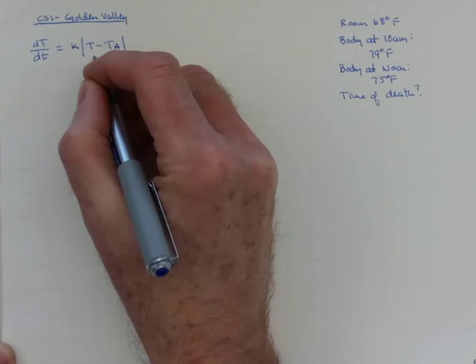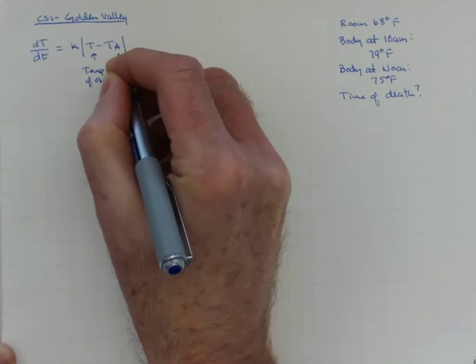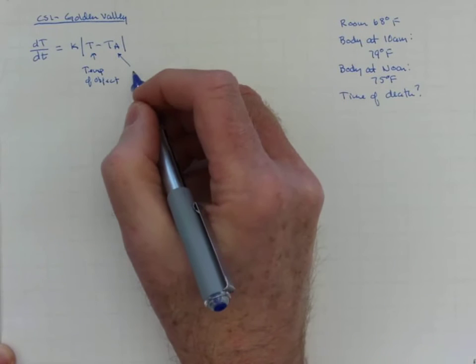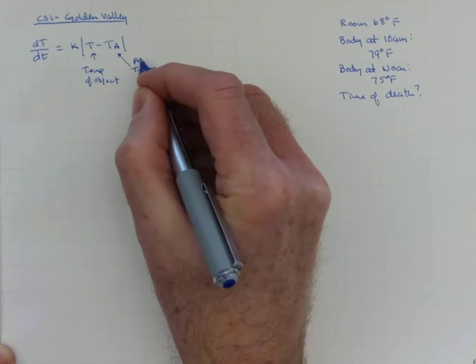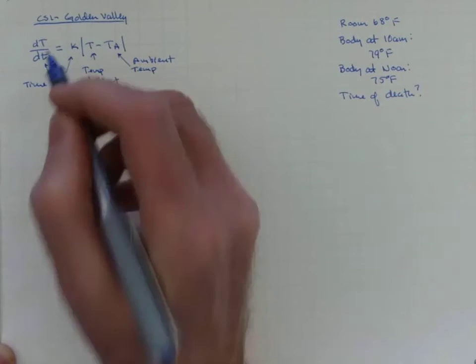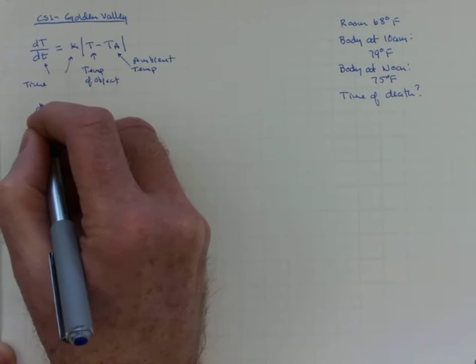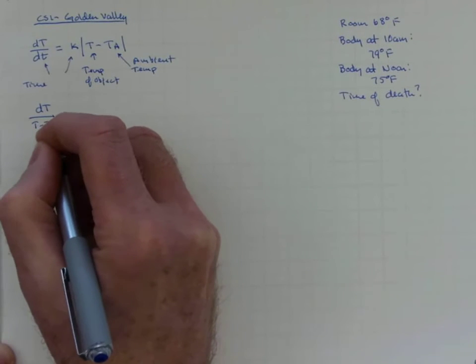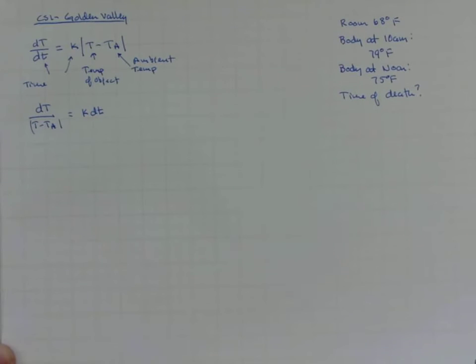Big T is going to be the temperature of the object, T sub a the temperature of the surroundings, which we hope is constant, the ambient temperature. Little t is going to be time, and then k is going to be the constant of proportionality that is unique to the situation. We have the good fortune to have here a separable differential equation because I can divide both sides by |T - Ta|, multiply both sides by dt, and now I have all the big T stuff on the left and all the little t stuff on the right, and I can go ahead and try and solve it.